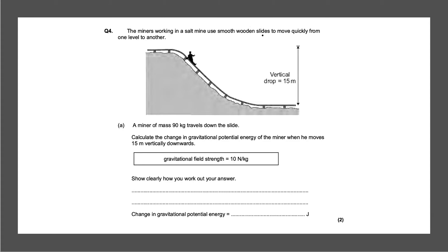Next question: miners working in a salt mine use smooth wooden slides to move quickly from one level to another. A miner of mass 90 kilograms travels down the slide. Calculate the change in gravitational potential energy of the miner when he moves 15 meters vertically downwards. The gravitational field strength is 10 newtons per kg. This question is worth two marks. The equation for gravitational potential energy is mass multiplied by gravitational field strength multiplied by height.